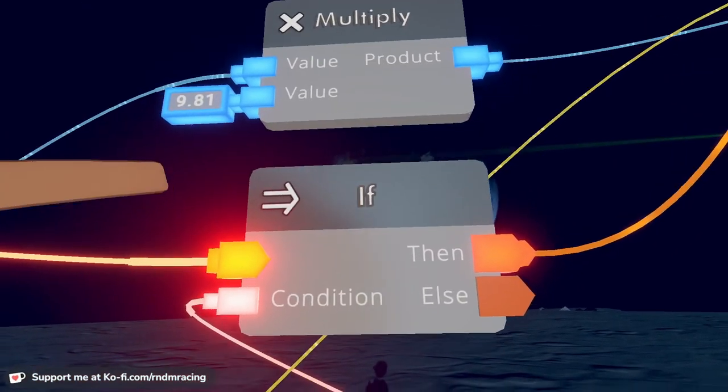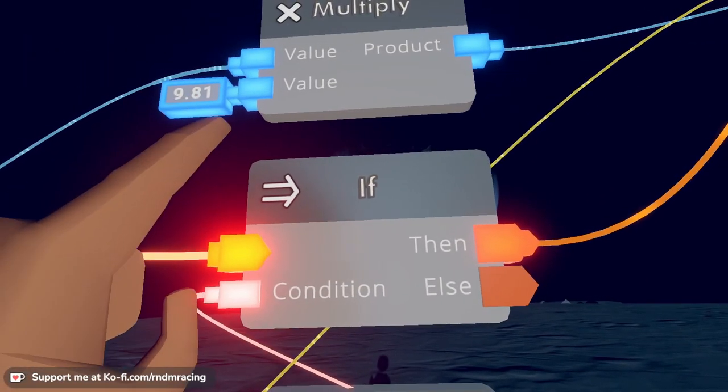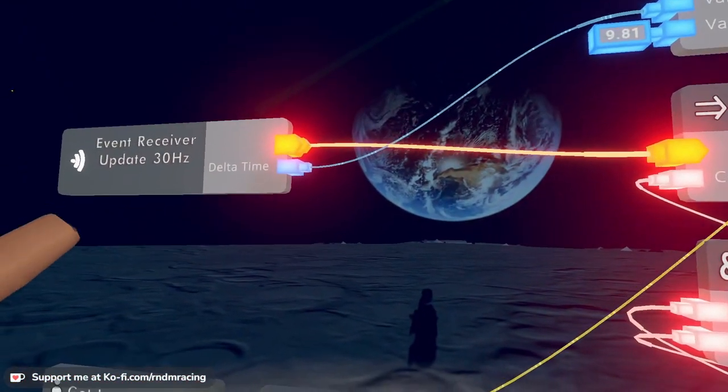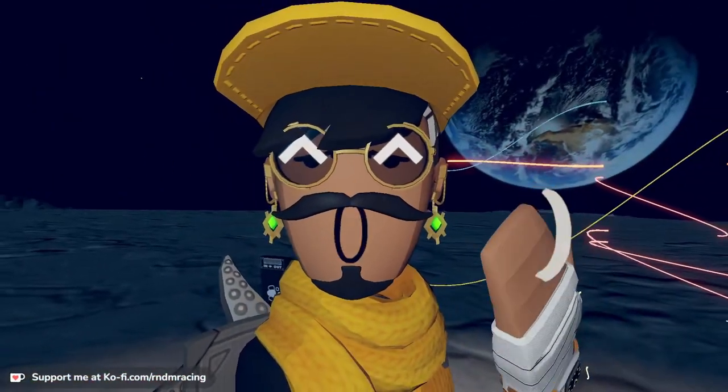On Enceladus we use a different number to simulate a different type of gravity, so you can change this one and you play around with it and you'll discover that it feels differently, right? But the important here is the Delta Time. So I'm going to turn the camera on again.